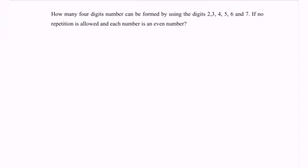Next, another example for permutation and combination. How many 4-digit numbers can be formed? Since the keyword is 'number,' this is a permutation situation. The digits available are 2, 3, 4, 5, 6, and 7. My suggestion is to split them into odd and even groups: even numbers are 2, 4, and 6.